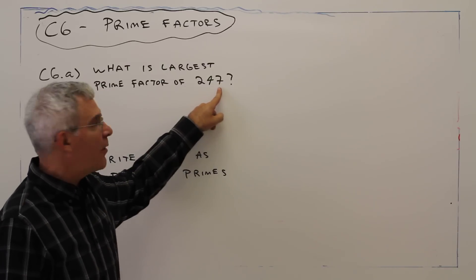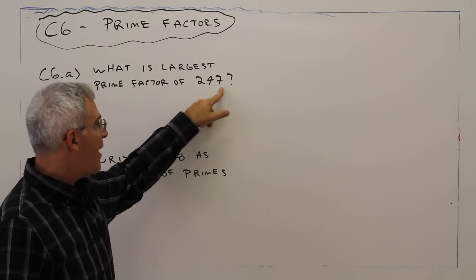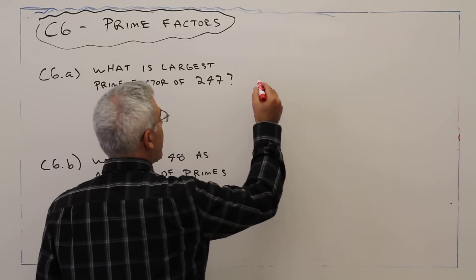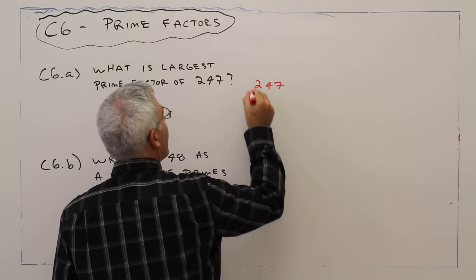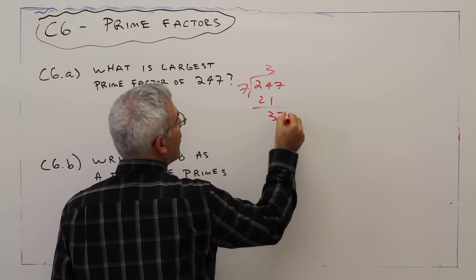So 2 doesn't go into there, sum of digits 3 doesn't go, 5 doesn't go, so I'll check 7. So 247 divided by 7, 3, 21, 37, no.